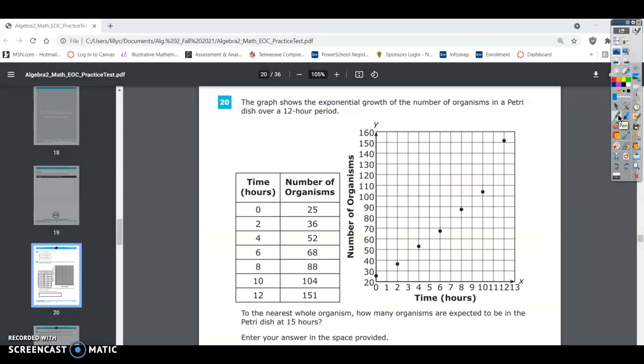Algebra 2 EOC practice test number 20. The graph shows the exponential growth of the number of organisms in a petri dish over a 12-hour period. To the nearest whole organism, how many organisms are expected to be in the petri dish at 15 hours?